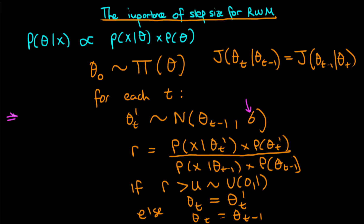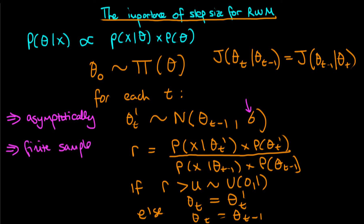Under a very general set of circumstances, the random walk metropolis algorithm is guaranteed to asymptotically converge to the posterior distribution — meaning in an infinite sample. But typically we don't have infinite time to run our sampler, so we're interested in its performance in a finite sample. It turns out that performance — how fast it converges — depends crucially on choosing an appropriate value of sigma.